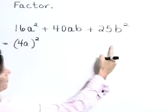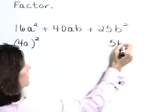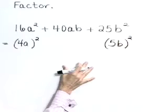Our last term, 25b squared, is 5b times 5b, or you might say 5b quantity squared.